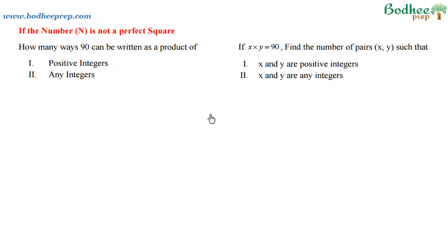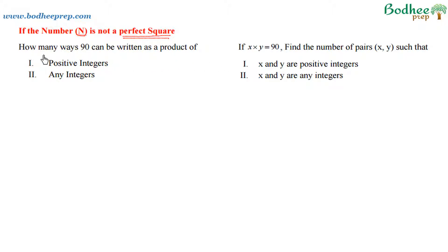Now let's take some typical questions which are based on finding integral solutions. I have divided the format of the question into four parts. The first part is whether the number n given is a perfect square or not. Taking the first case where the number given is not a perfect square, there are two ways of reading the questions. One way is: in how many ways can the number 90 be written as a product of two numbers?